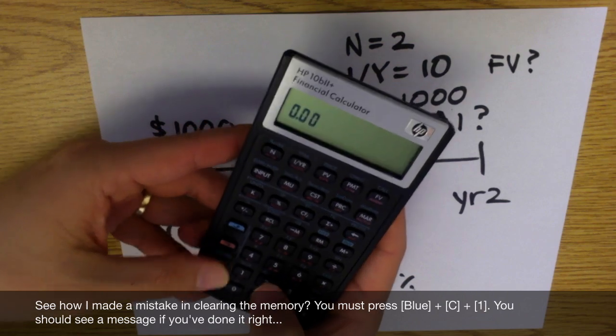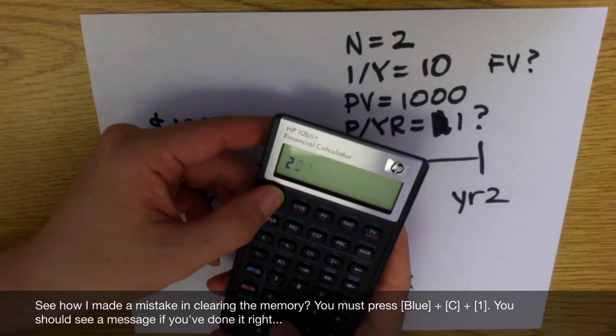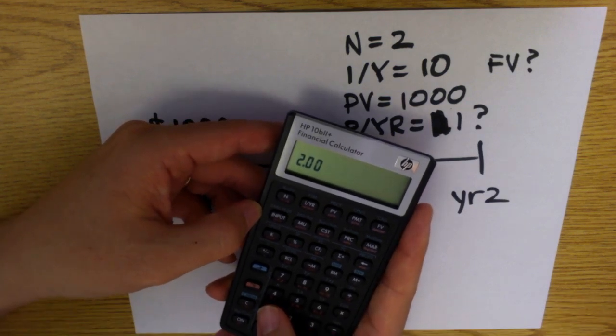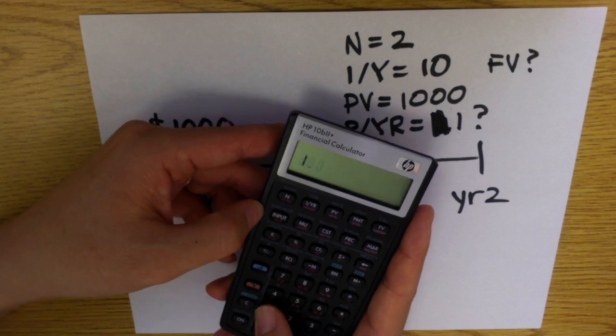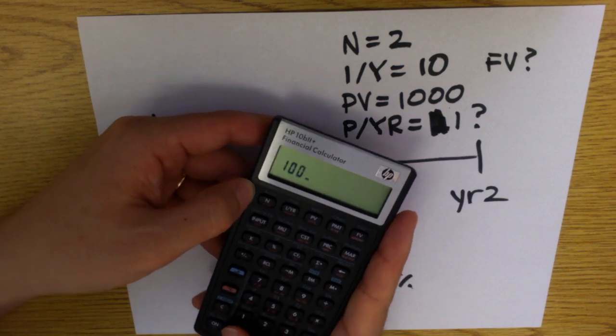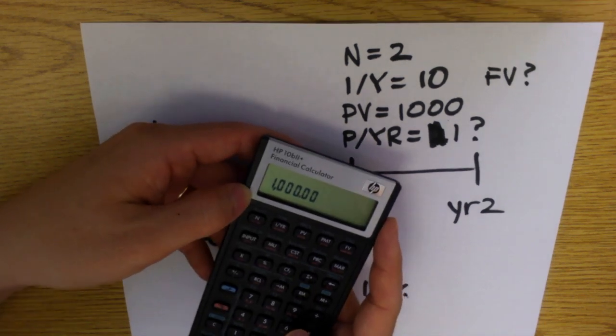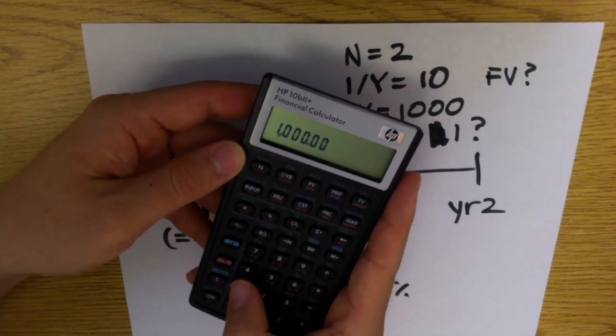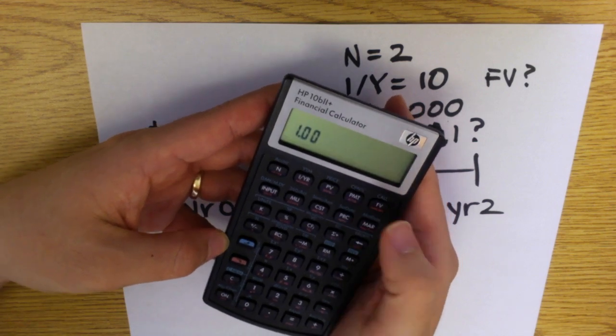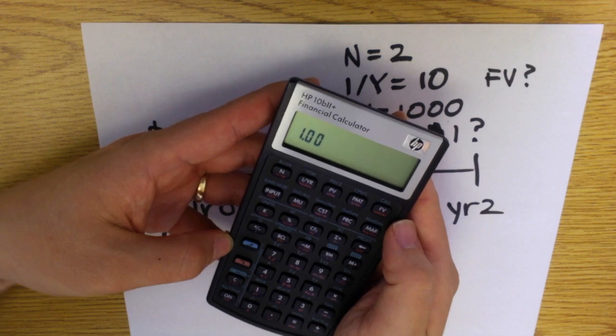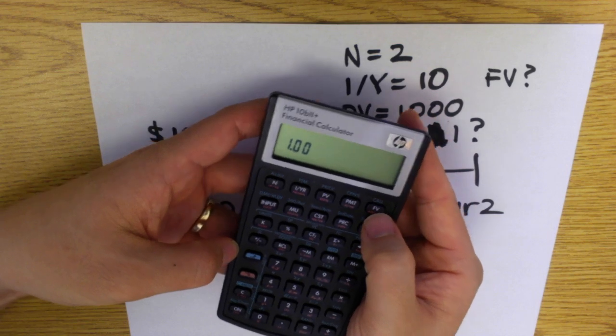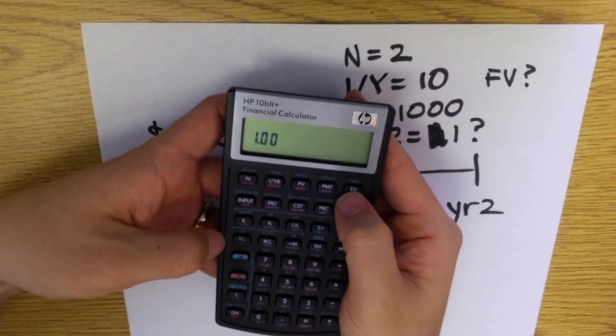What we want to figure out is what the future value is. So you basically enter all that in. First you clear the memory, enter two N, and then interest per year, this is not in terms of decimals, this is just percentage point, so ten percent per year. And you currently have one thousand dollars PV, and you're going to get paid once a year, so that's one payment per year, red shift and then P/YR. And then once you entered all the parameters you can just hit the button that you want an answer for. In this case it's future value.